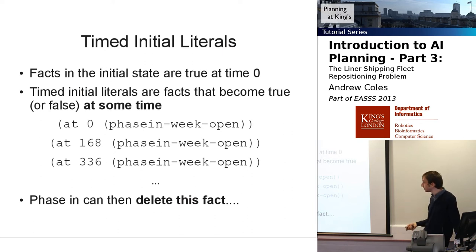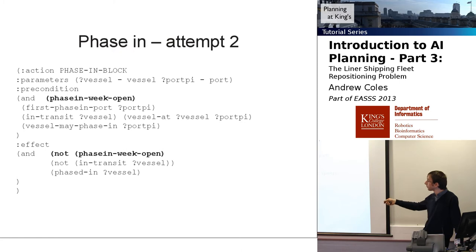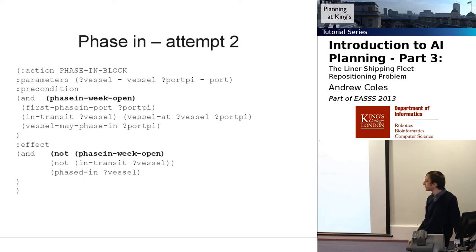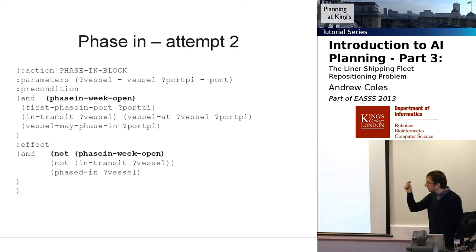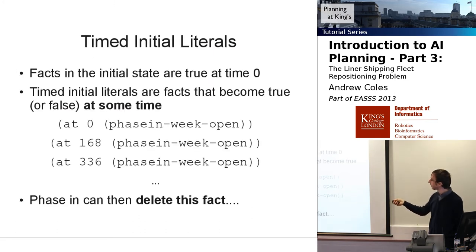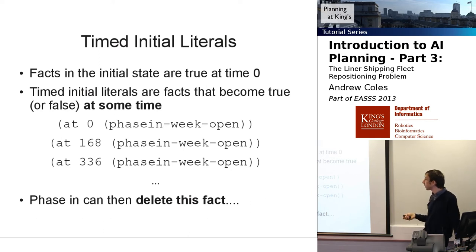Phase-in-week-open says nothing has phased in this week, and it becomes true at one-week intervals: 168 hours is 24 times 7. So 168 is the start of the first week, 336 the start of the second week, 504 the third, and so on. We make a small modification to the domain: phasing-in deletes this fact. Phase-in-week-open becomes a precondition of the phasing action. When we apply this action we delete it, so if we want to phase in something else, we must wait for the next timed initial literal to kick in. That's a fairly small modification to the model and a good use of that language feature.